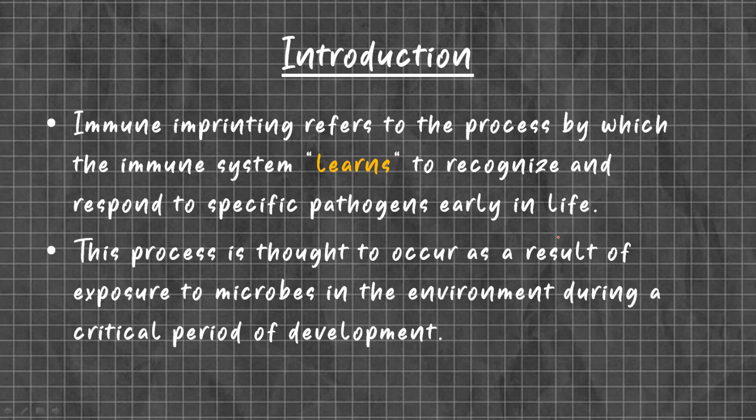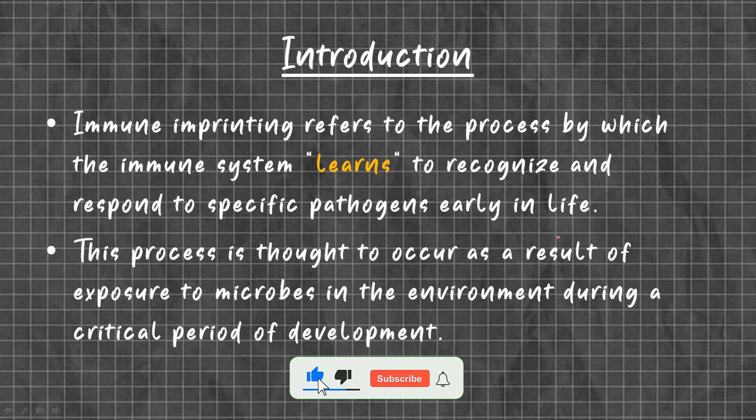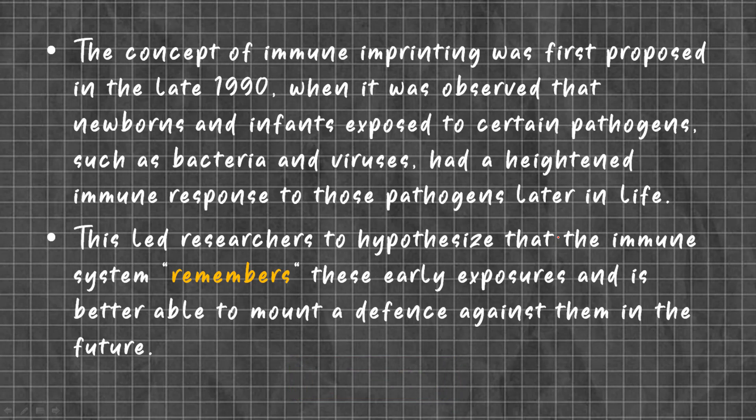Immune imprinting refers to a process by which the immune system learns to recognize and respond to specific pathogens early in life. This process is thought to occur as a result of exposure to microbes in the environment during a critical period of development. The concept was first proposed in the late 1990s, when it was observed that newborns and infants exposed to certain pathogens such as bacteria and viruses had a heightened immune response to those pathogens later in life.